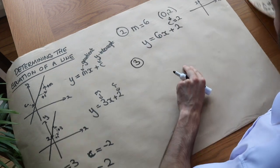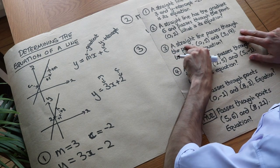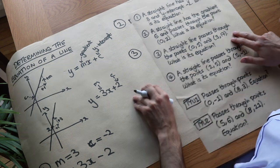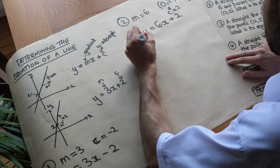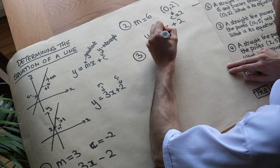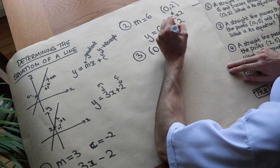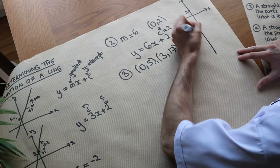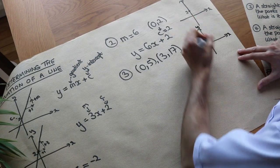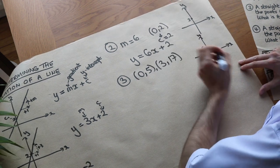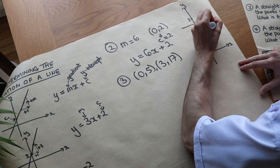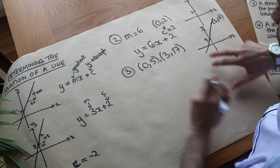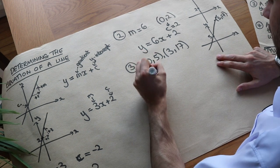Now it's getting increasingly more difficult because I'm giving you less explicit information. A straight line passes through the points 0, 5 and 3, 17. What is its equation? We're given two points — 0, 5 and 3, 17 — but we're not given the gradient directly. We are given the y-intercept though: since x is 0 at the first point, the y-intercept is 5. So c equals 5.